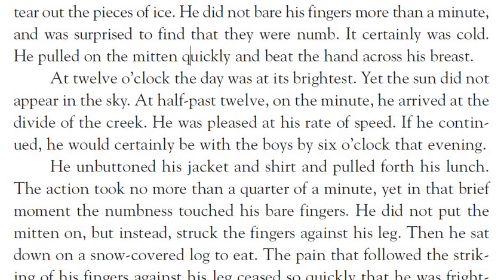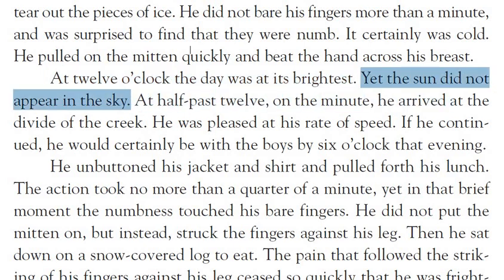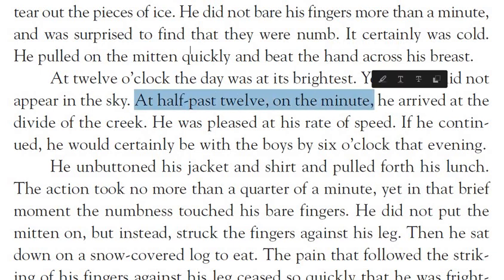Moving on to Part 2: at 12 o'clock the day was at its brightest — the sun was just above their heads — yet the sun did not appear in the sky. From Part 1, we know the sun had not been visible for a couple of days, possibly because of the snow. Despite not seeing the sunrise, it was brightest at half past 12.